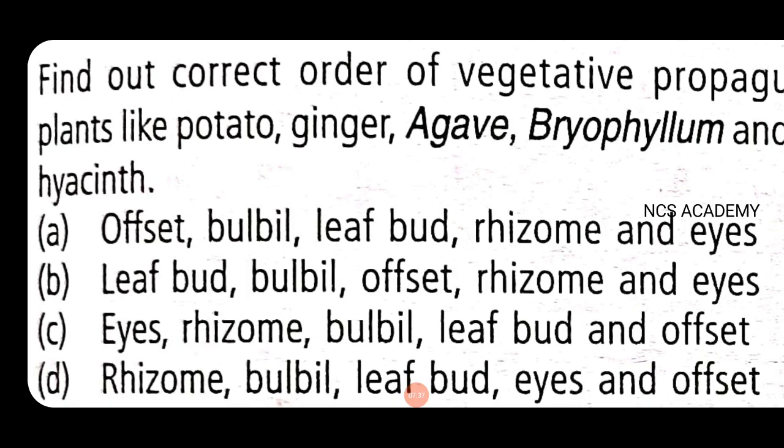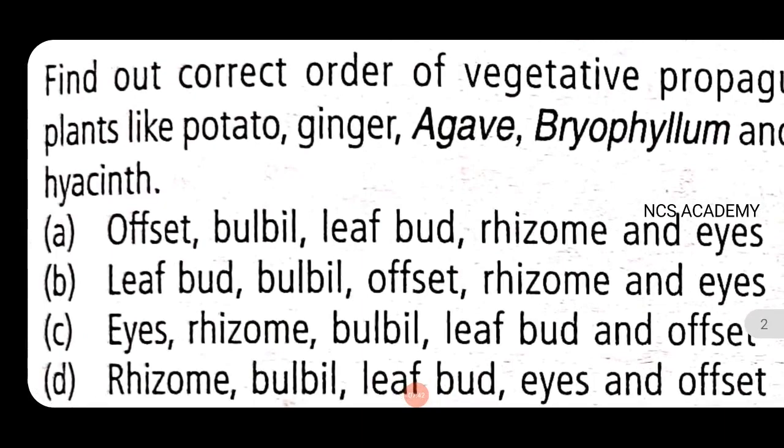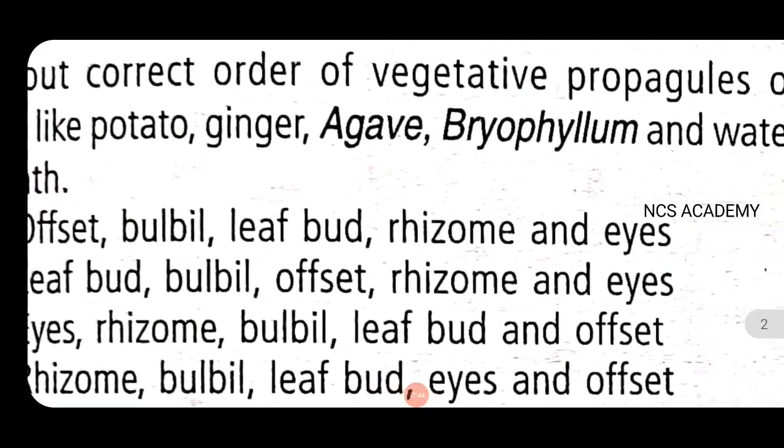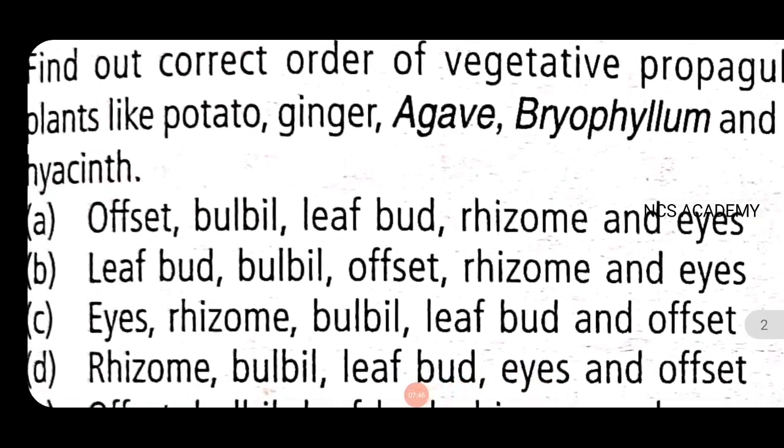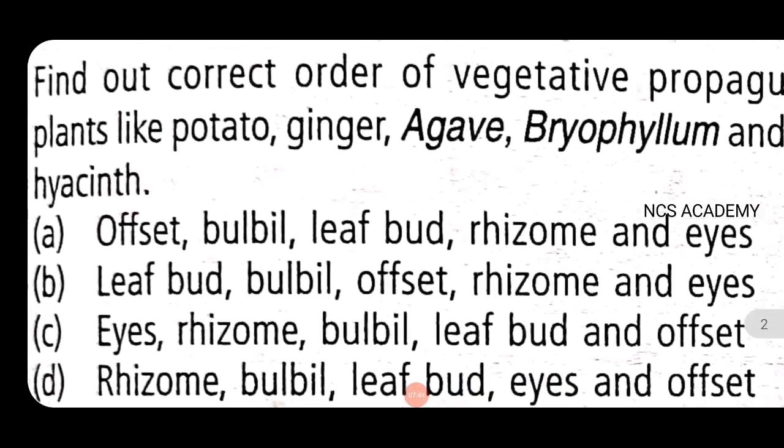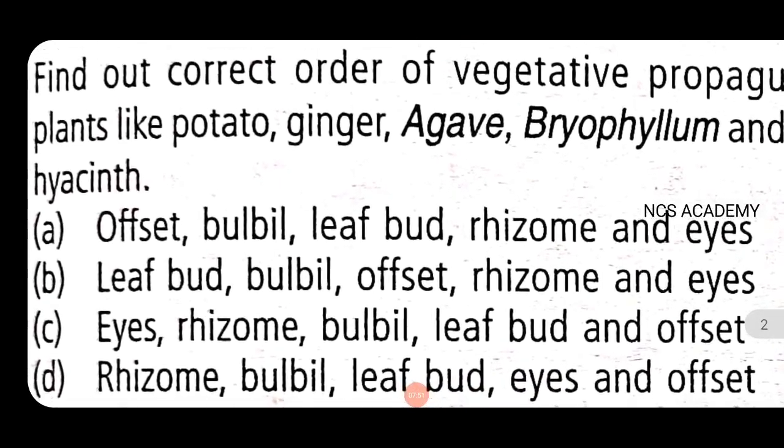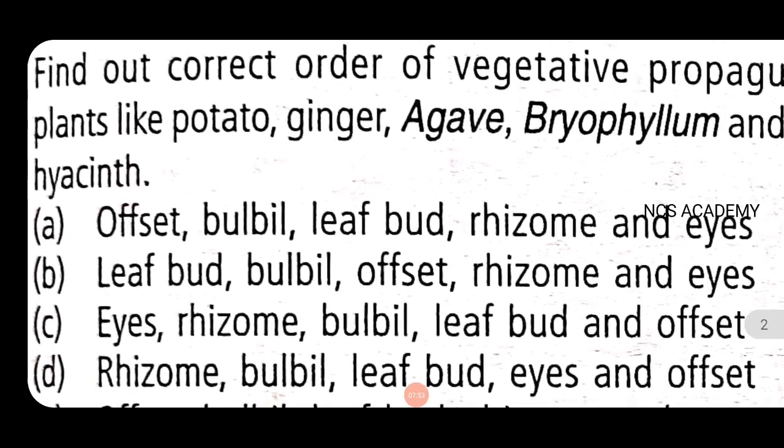Next question: Find out the correct order of vegetative propagation. Plants like potato, ginger, agave, bryophyllum and water hyacinth. This is the correct sequence. In the note, the right option will be under C. Agave will be leaf bud and offset, this is the vegetative propagule.